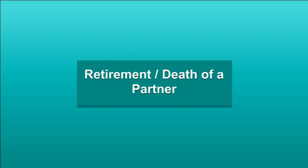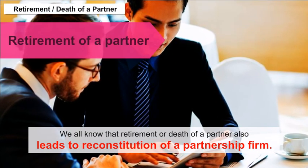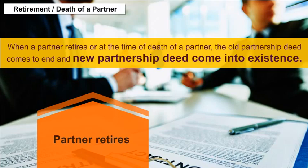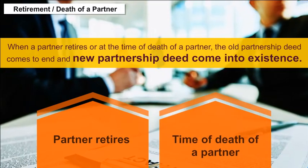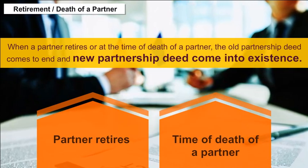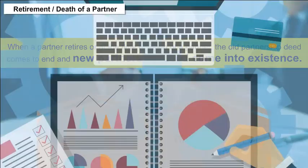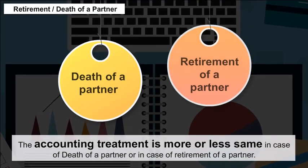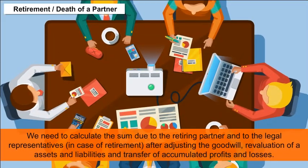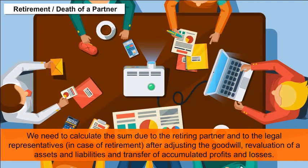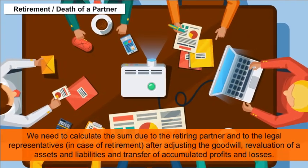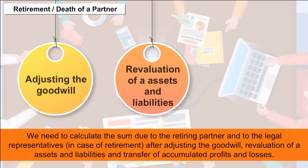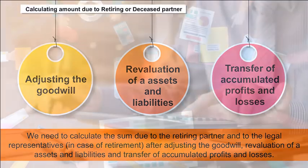Retirement or death of a partner also leads to reconstitution of a partnership firm. When a partner retires or dies, the old partnership deed comes to an end and a new partnership deed comes into existence. The accounting treatment is more or less the same in both cases. We need to calculate the sum due to the retiring partner and to the legal representatives in case of a deceased partner, after adjusting the goodwill, revaluation of assets and liabilities, and transfer of accumulated profits and losses.